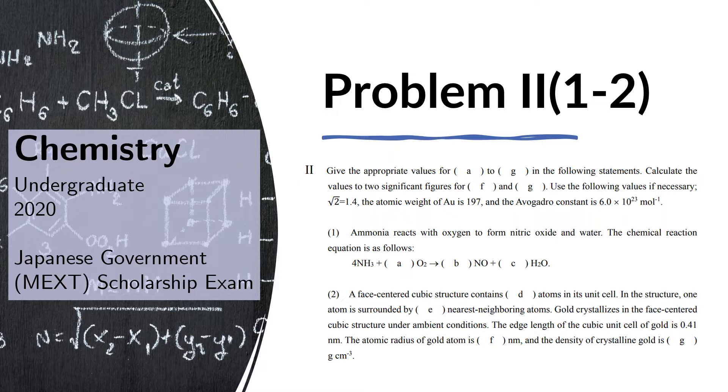Question 1. Ammonia reacts with oxygen to form nitric oxide and water. The chemical reaction equation is as follows.